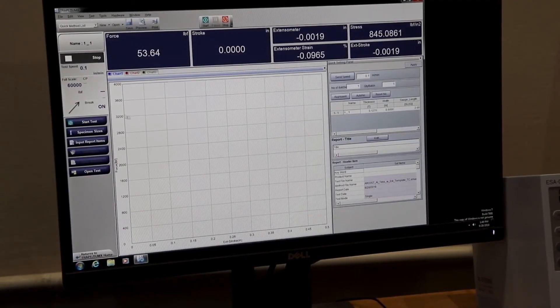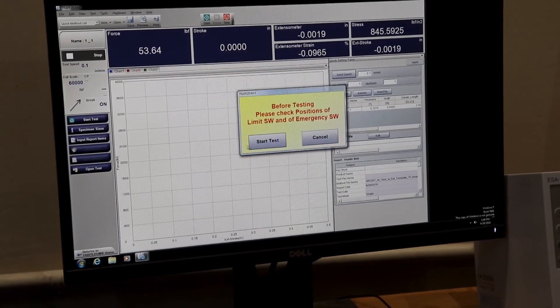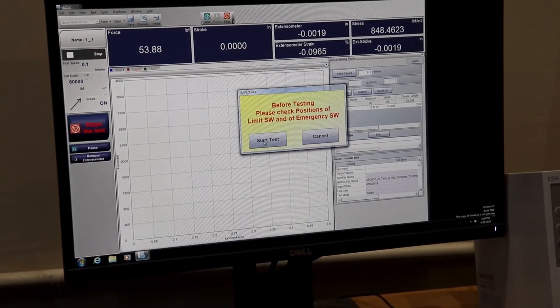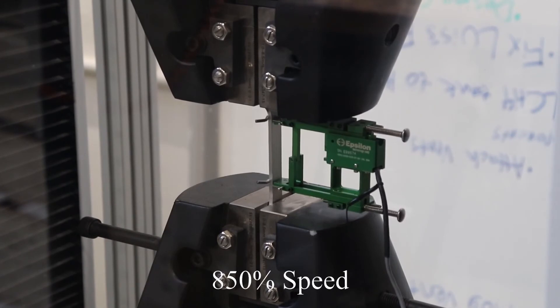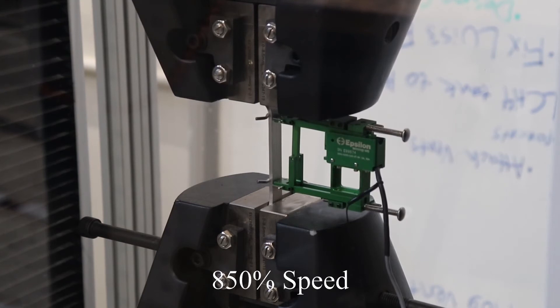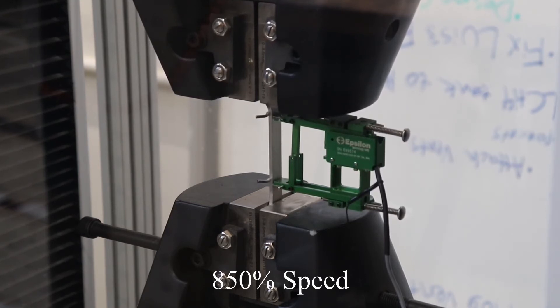We are now ready to begin our test by clicking Start Test and Start Test Again. As the test proceeds, the software will plot a stress versus strain curve. During the test, the e-stop button should be used any time a concern arises regarding the safety of the students or equipment, or if testing proceeds in an unexpected manner.